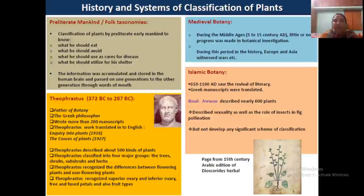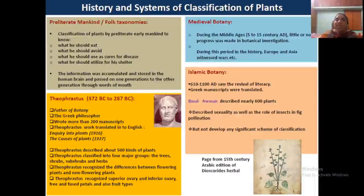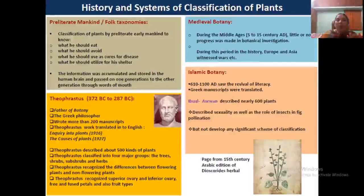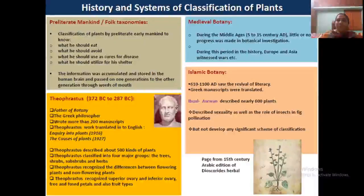The history of classification has a long history. Pre-illiterate mankind — when humans did not know how to read or write — only needed to know which plants could be eaten, which should be avoided, which were poisonous, which could cure diseases, and which could be used as shelter. This basic knowledge constitutes the beginning of taxonomy. These people are known as folk taxonomists, and their information was accumulated and stored in the human brain.